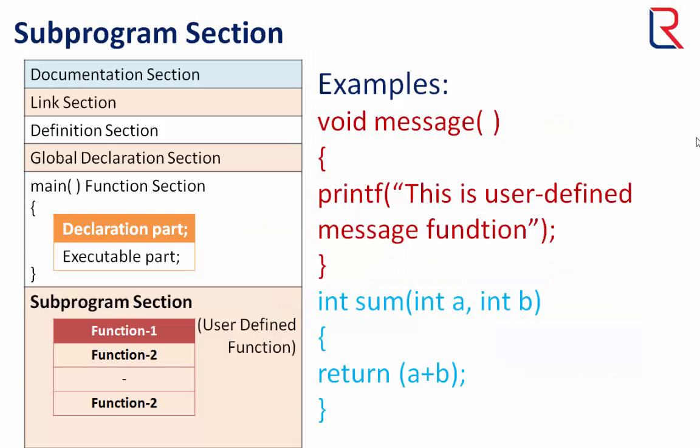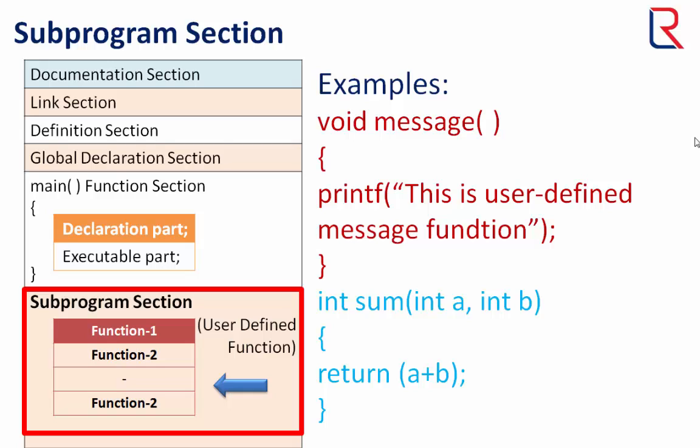Now the time for sub program section. The sub program section contains all the user defined functions that are called in main function. User defined functions are generally placed immediately after the main function, although they may appear in any order. Here are two examples of user defined functions. You can see all sections except the main function section may be absent when they are not required.